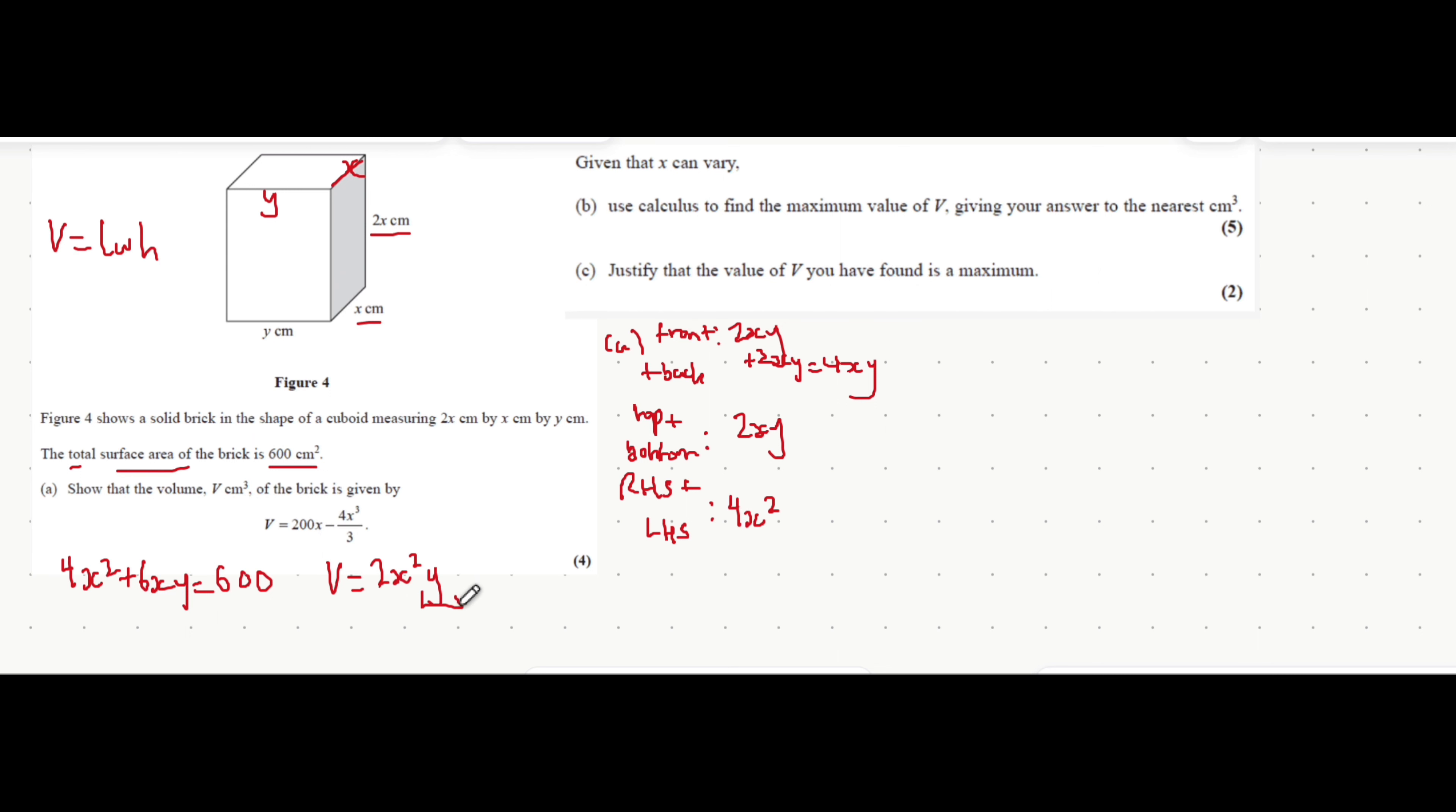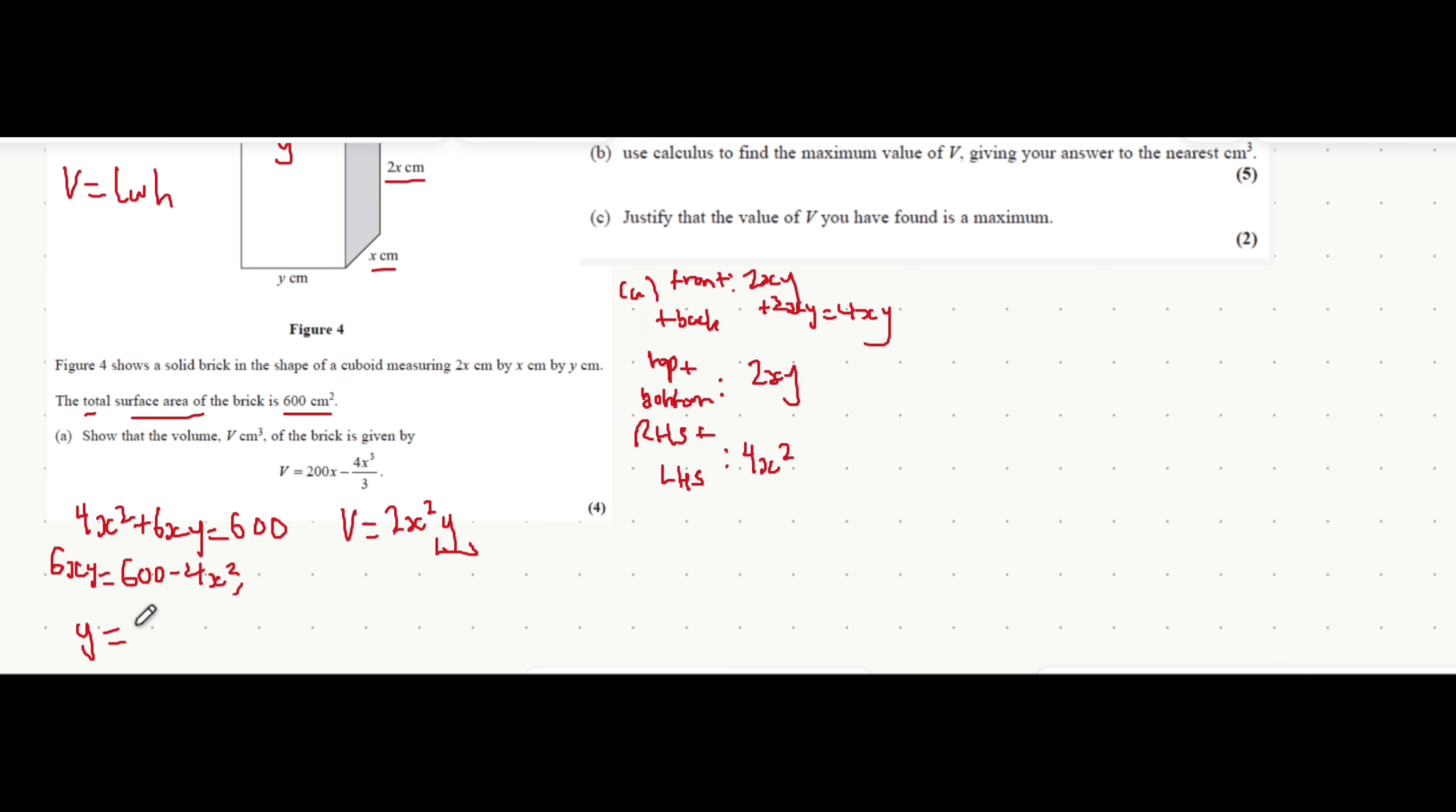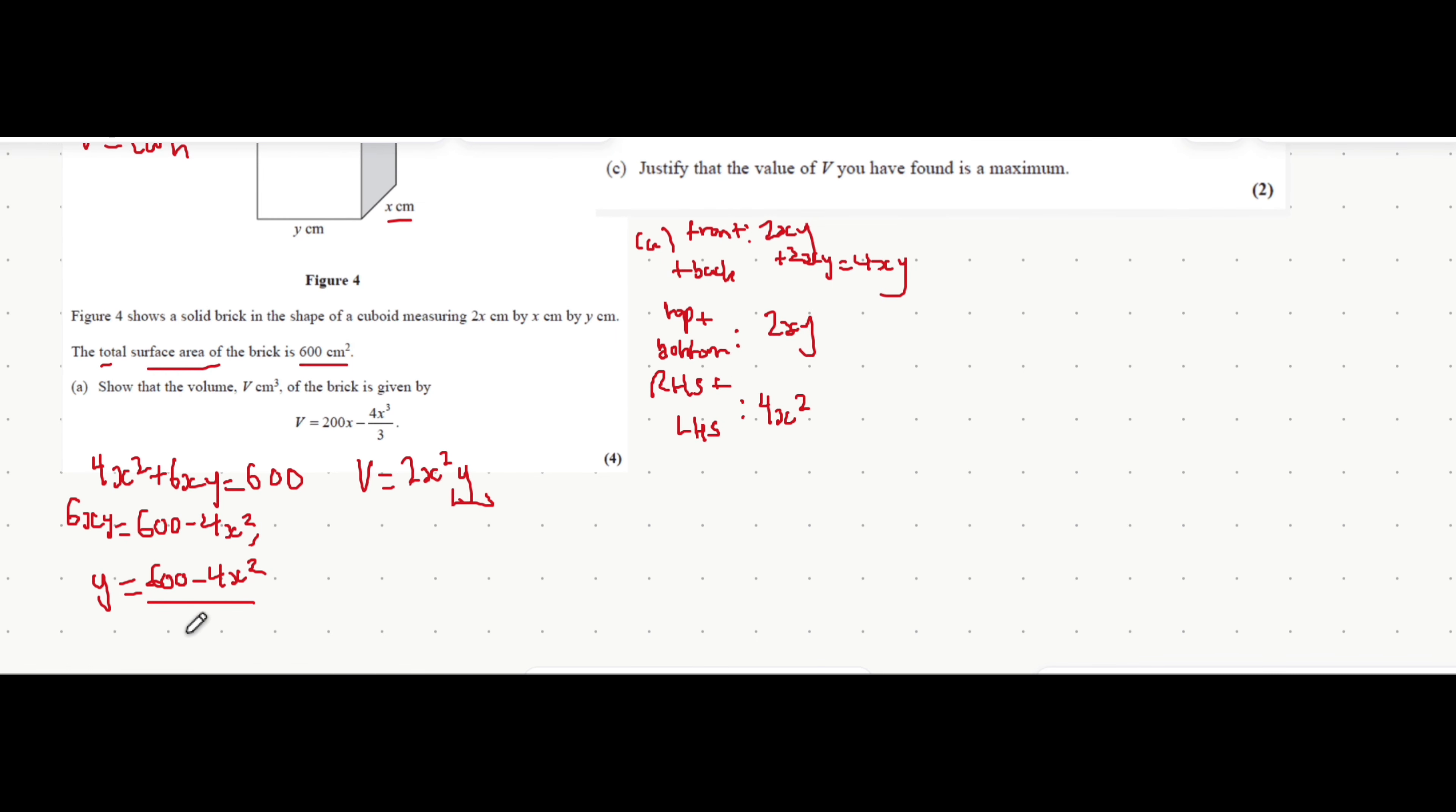In this equation that we formed we can make y the subject and then substitute that into this equation which replaces the y. So let's do that. 6xy is equal to 600 minus 4x squared, and then you divide both sides by 6x to get that y is equal to 600 minus 4x squared all over 6x.